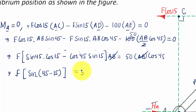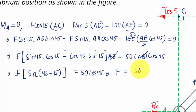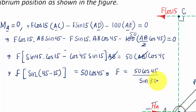So F × sin 30 = 50 cos 45. Rearranging: F = 50 cos 45 / sin 30. Putting this into a calculator gives F = 70.7 Newtons.